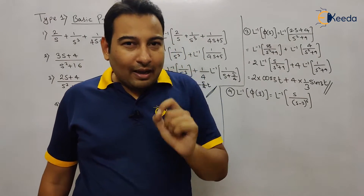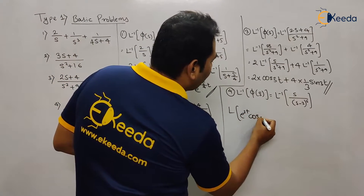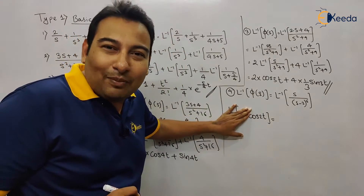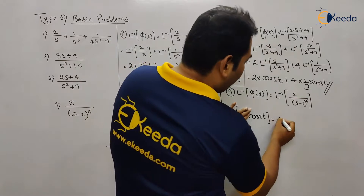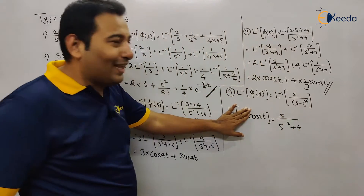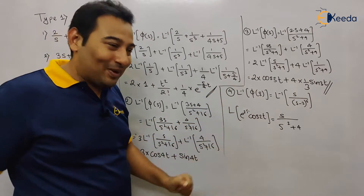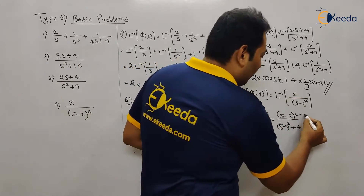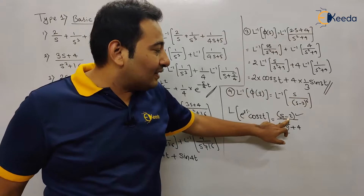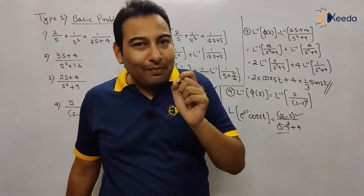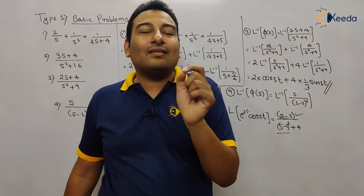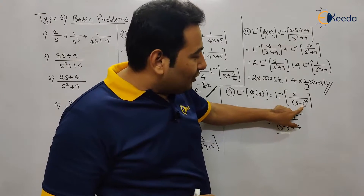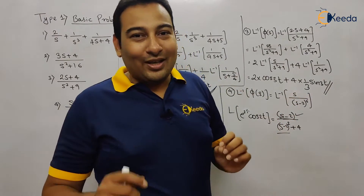Why is it not shifting? Whenever we apply shifting, every s must be shifted. Let me give an example: for e^(2t) cos(2t), the Laplace is s/(s²+4) with s shifted to s−2. Shifting means every s must be shifted. But in the given problem, the denominator is shifted by −2 while the numerator s is not shifted by −2. So shifting is not present here.